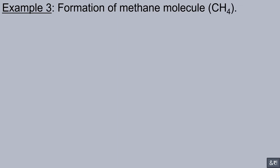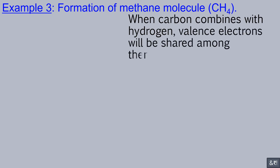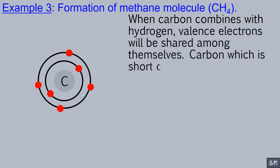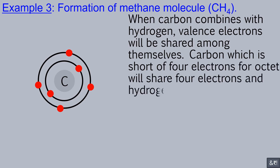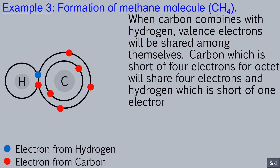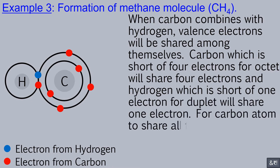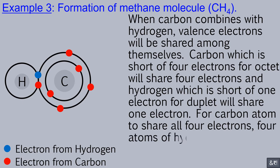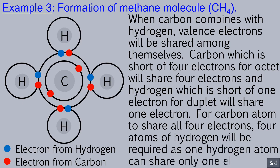Example 3: Formation of methane molecule CH4. When carbon combines with hydrogen, some valence electrons will be shared among themselves. Carbon, which is short of four electrons for octet, will share four electrons, and hydrogen, which is short of one electron for duplet, will share one electron. For a carbon atom to share all four electrons, four atoms of hydrogen will be required, as one hydrogen atom can share only one electron.